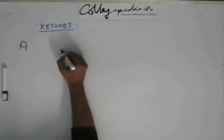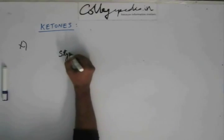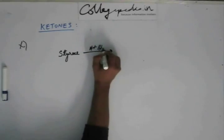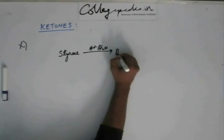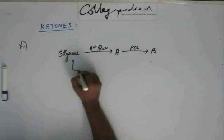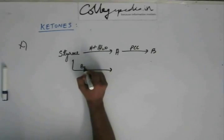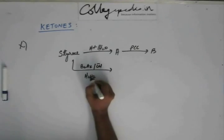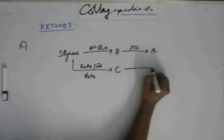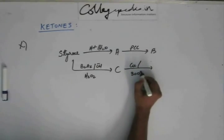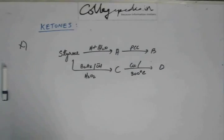So let's quickly solve something. If I have styrene, I added H+ and H2O to this, I got A. If I added PCC to this, I got B. To styrene, if I add diborane in basic medium in presence of hydrogen peroxide, I get C. And that C, if I add Cu at 300°C, I get D. Quickly tell me what's A, B, C, D.